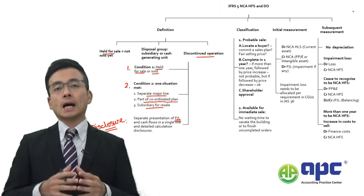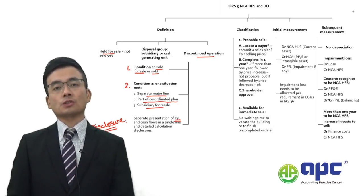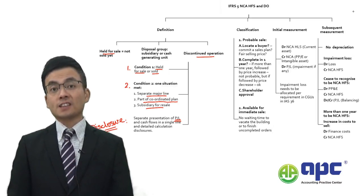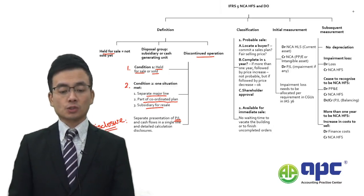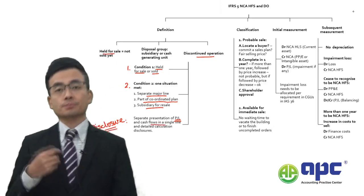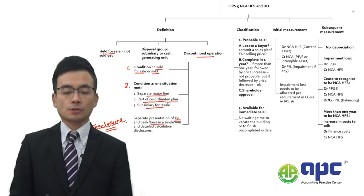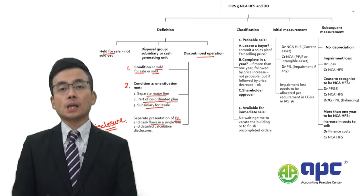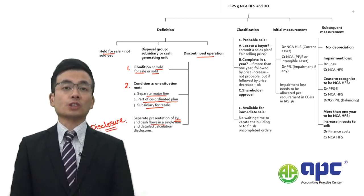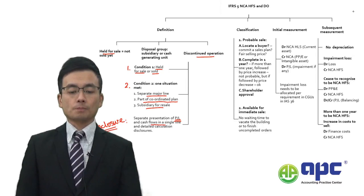What you need to do is separately present the P&L of the discontinued operations in the statement of profit or loss. Also for discontinued operations, including the operating, investing, and financing cash flows altogether, you present them separately in the statement of cash flows. In the P&L, you also need to calculate the earnings per share.